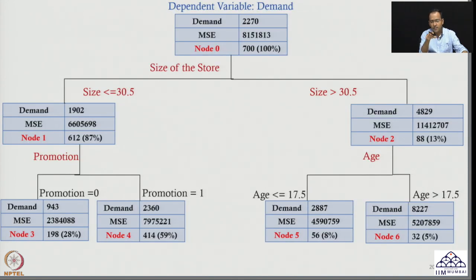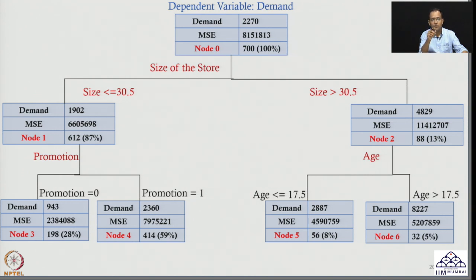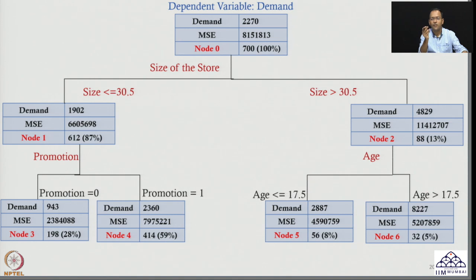This is the whole regression tree model we have seen. The question is how this model was built. Why was node 0 split by the parameter 'size of the store'? Why was node 1 split using promotion? Why was node 2 split using age? There are 7 variables — but why did these 3 get importance? And regarding age, why is the cutoff value 17.5? Why not 10, 20, 18, or 17.4?